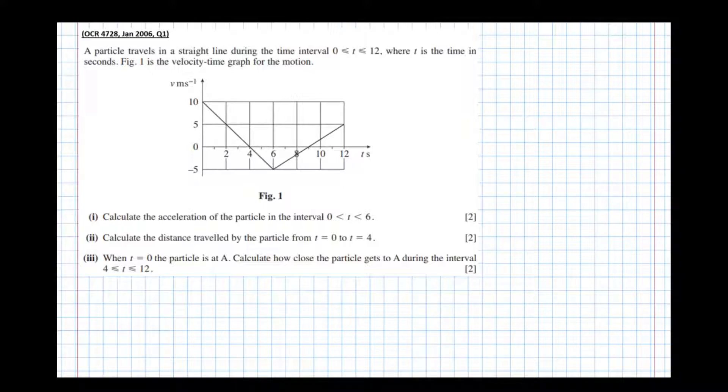We've got a velocity time graph, velocity on the y axis, time on the x axis. Acceleration is the rate of change or gradient. So we've got two points here. What we're going to do is find the y difference over the x difference.